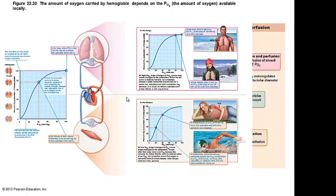When hemoglobin is carrying oxygen, we call it oxyhemoglobin. When we drop off oxygen, we call hemoglobin deoxyhemoglobin. And what do we call hemoglobin that now carries carbon dioxide? Carbaminohemoglobin. Just know those terms.